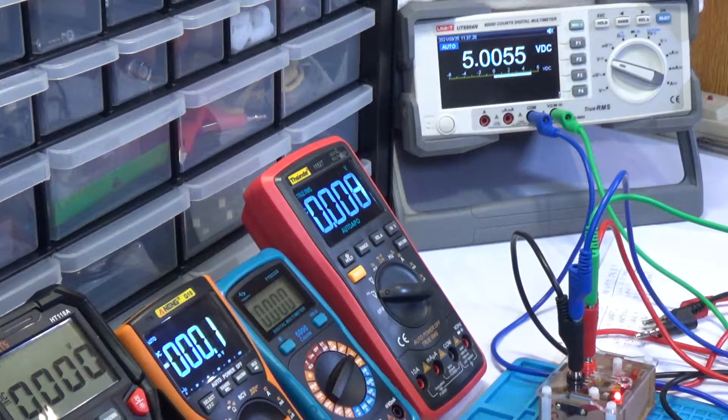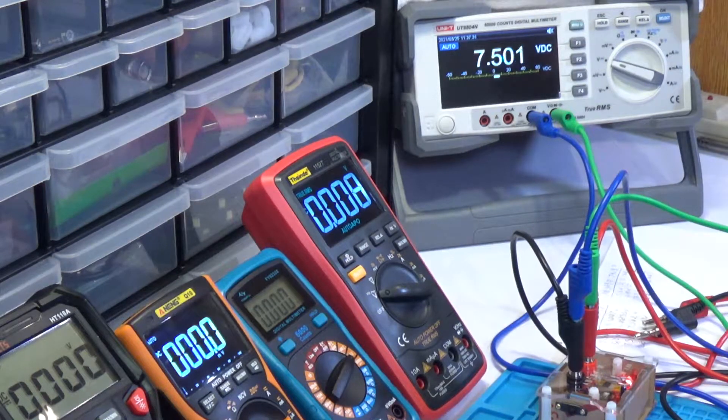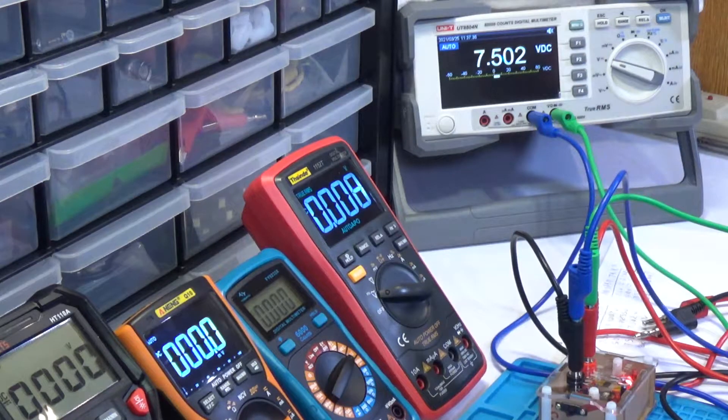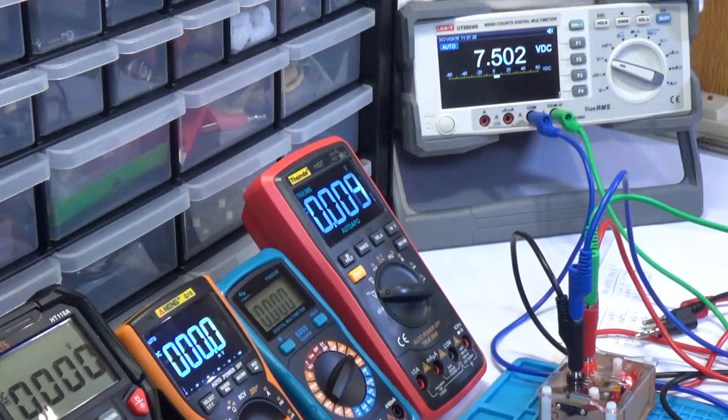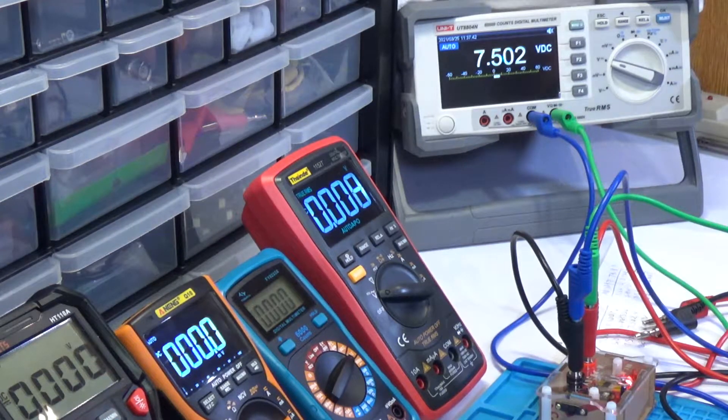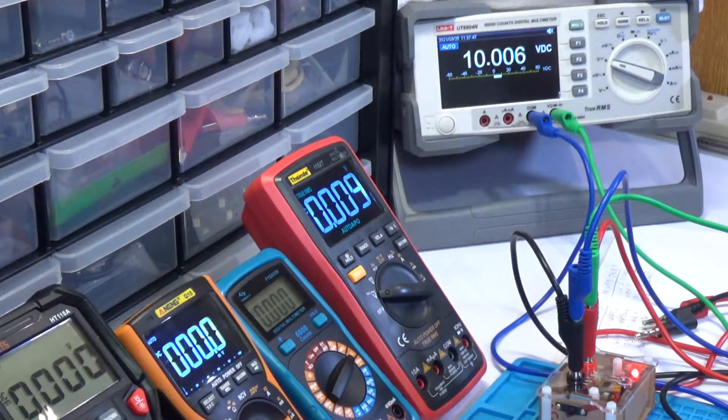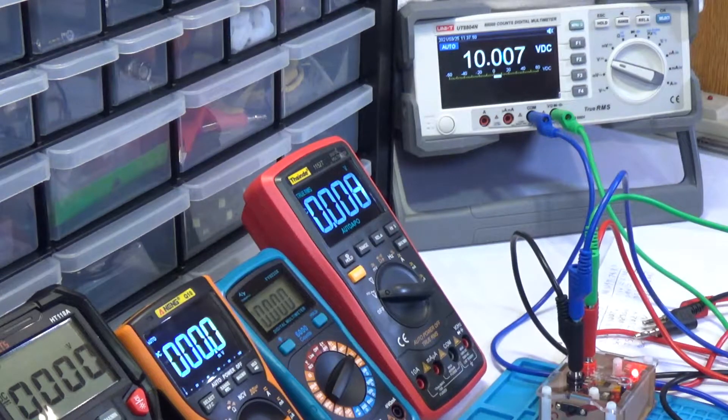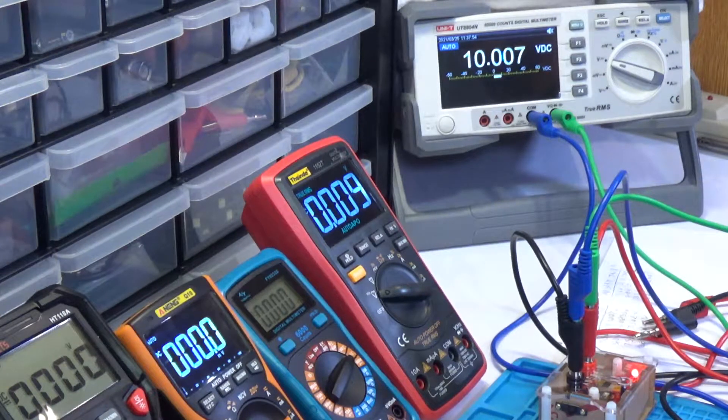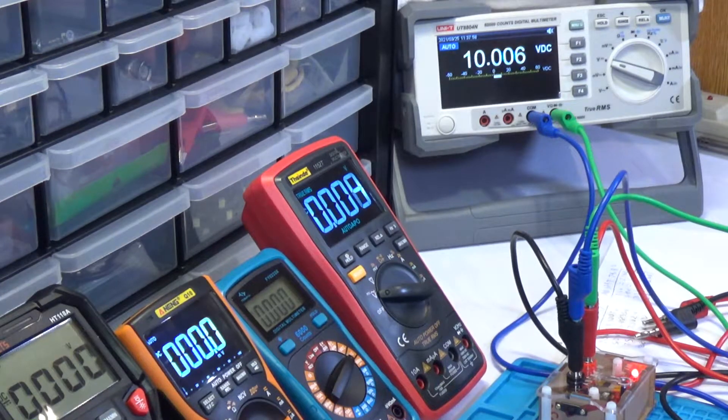5 volts should settle around 5.0054, which it is. It's wavering a little bit but that's pretty much what I was getting. On 7.5 should be 7.502 most of the time, and it will waver a little bit between 7.501 and 7.503. But the vast majority of the time it's going to be on 7.502.